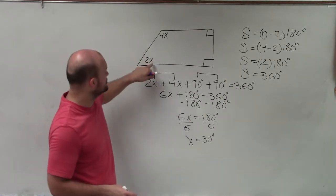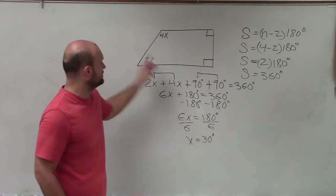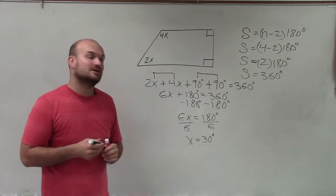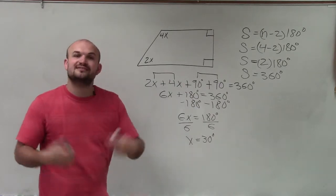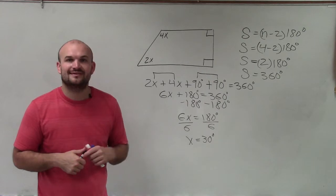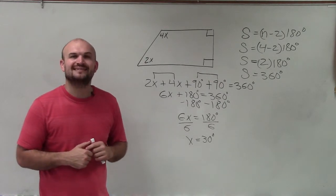So therefore, if I needed to solve for either one of these angles, I could plug in 30 degrees. But in this case, I'm just looking for the value of x, which is 30 degrees. So there you go, ladies and gentlemen. That is how you solve for your missing variable of a polygon. Thanks.